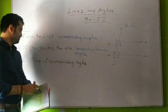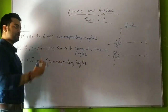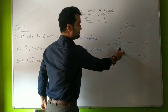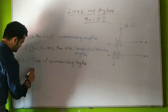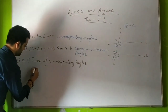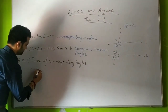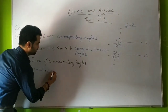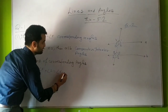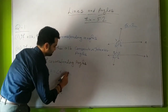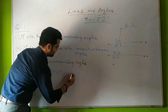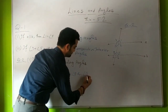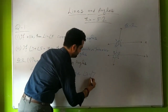On the basis of this figure, for question number 2 we have to write the pairs of corresponding angles. The pairs of corresponding angles are: angle 1 and angle 5, angle 2 and angle 6, angle 4 and angle 8, and angle 3 and angle 7.